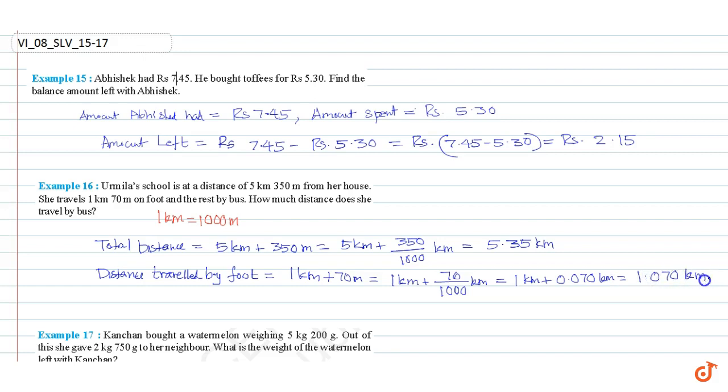Distance traveled by bus equal to total distance minus distance traveled on foot. That is 5.35 km minus 1.07 kilometers. This is equal to 4.28 kilometers.